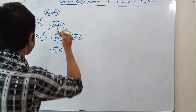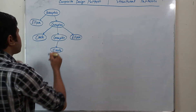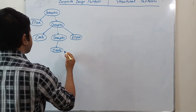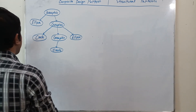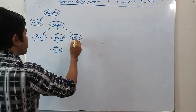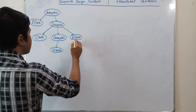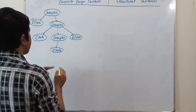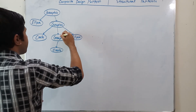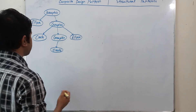Here we have an object diagram. The object diagram represents a tree structure where we have one, two, three and four objects — leaf objects — and also we have one, two, three composite objects.